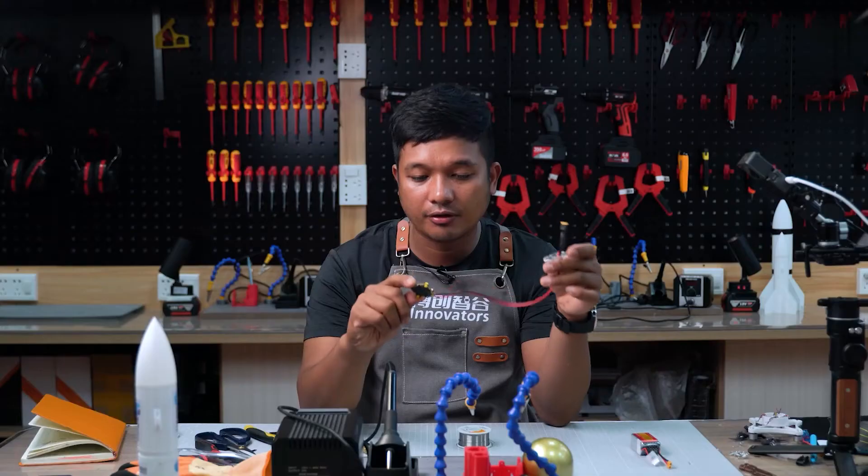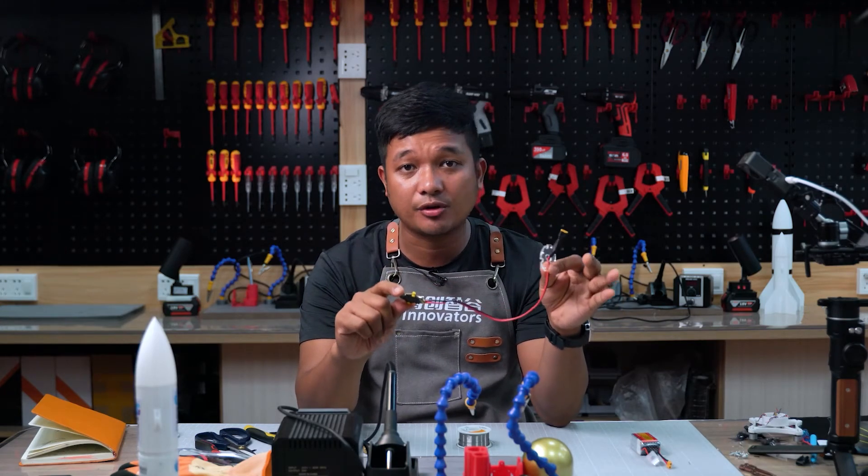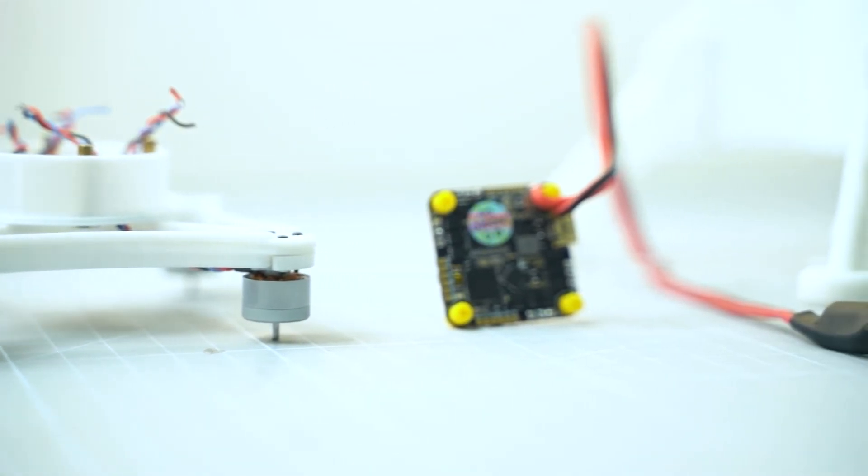Now, we successfully finished the power cord to the flight controller. The next thing we need to do is to solder all the necessary things like motor to our flight controller.